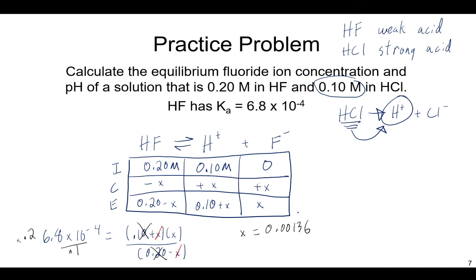Is this x less than 5% of the smallest number, 0.2 and 0.1? So is it less than 5% of 0.1? And the answer is yes. 0.00136 so that passes the test and neglecting x was safe. And so I have my x concentration here, but be very careful.